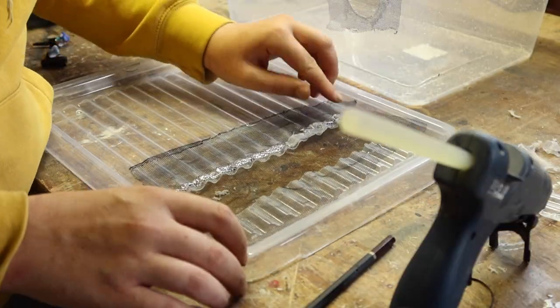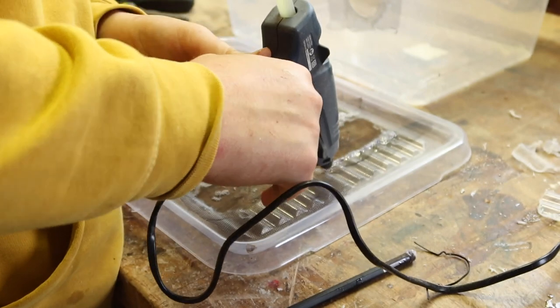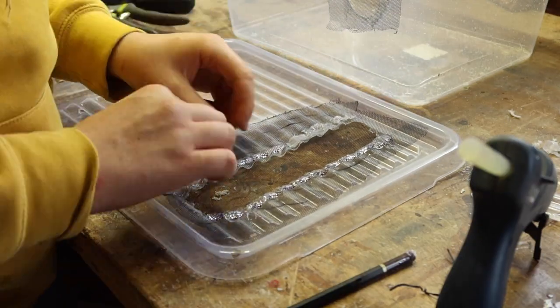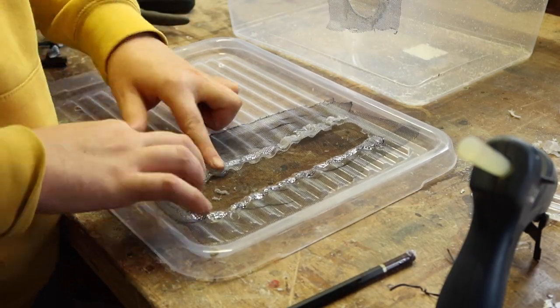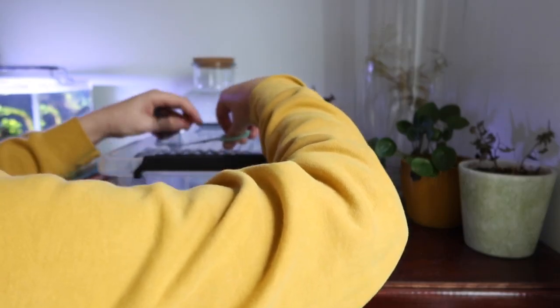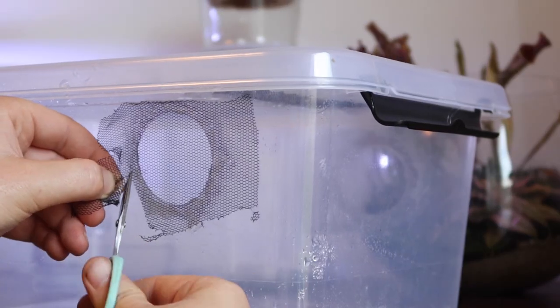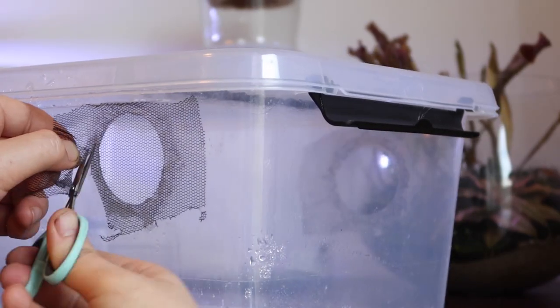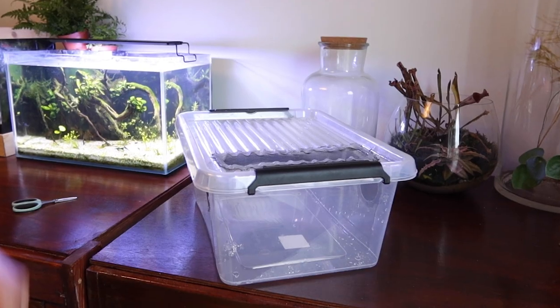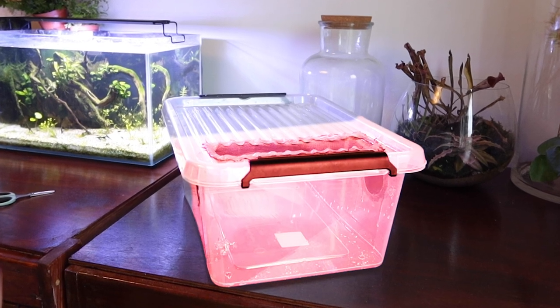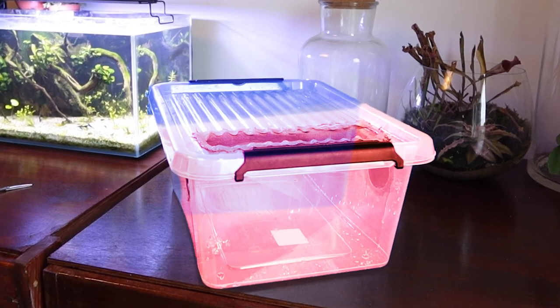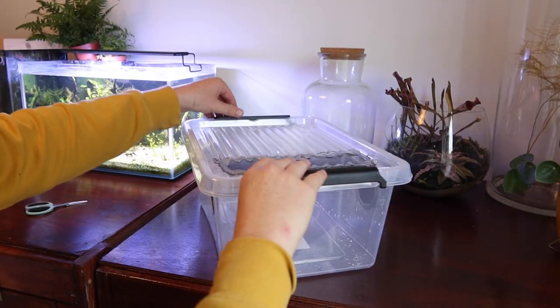These holes are then covered with some mesh, so the isopods won't be able to escape. These modifications make sure one side of the tank dries up very easily, while the other doesn't. Now, let's get scaping.